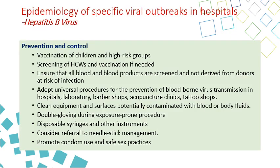Prevention of hepatitis B transmission is through vaccination. There is a vaccine against hepatitis B that should be given to children during normal immunization and to high-risk groups. Screen health care workers before starting work, and if they are not immune, give them the three doses of the vaccine. Ensure that all blood and blood products are screened and not derived from high-risk donors. This is done routinely in the laboratory. Adopt universal precautions for prevention of blood-borne virus transmission in hospitals, laboratories, barbershops, acupuncture clinics, and tattoo shops — any location where contact with blood is possible.